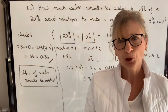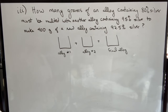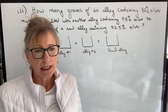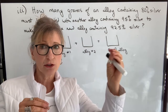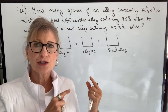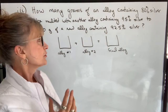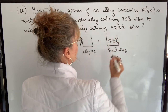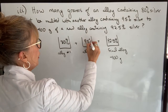Let's try one more. This question says: how many grams of an alloy containing 80% silver must be melted with another alloy containing 95% silver to make 400 grams of a new alloy containing 92.5% silver? The key difference here compared to the other two questions is that we know the final amount — 400 grams — but we don't know how much of either starting alloy we're going to use.